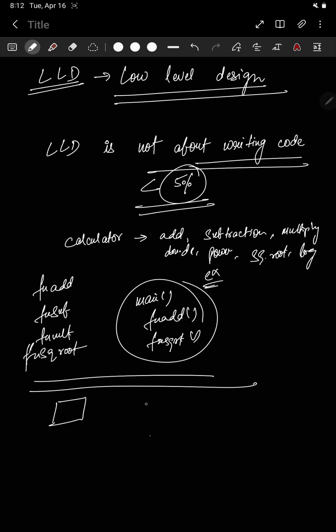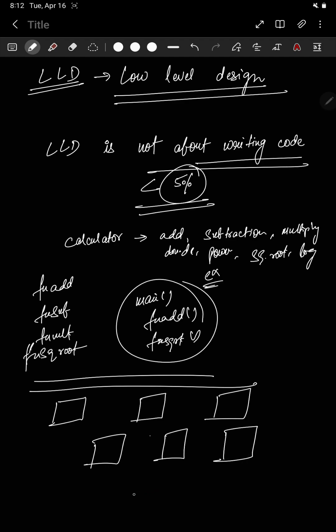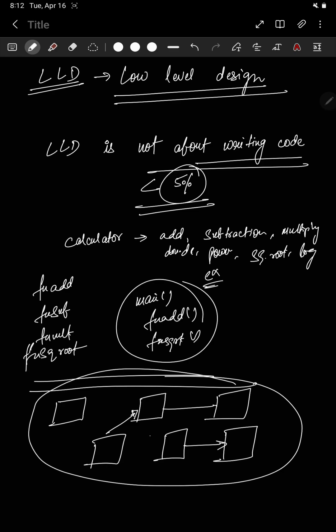That's where LLD comes in. When an interviewer asks you to design the LLD of a system, what you need to do is tell them: this is a class, this is an interface, this is an enum, this extends that, these have a 'has-a' relationship, this inherits from that. These relationships are what matter — you do not need to go on writing code. You can even show this in draw.io.